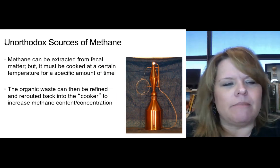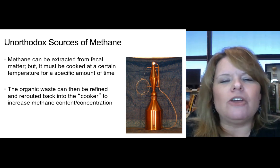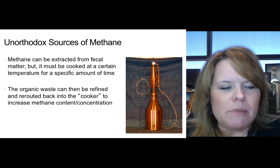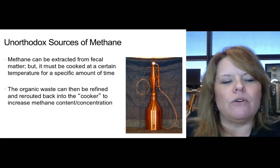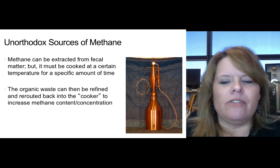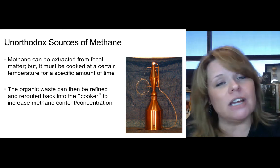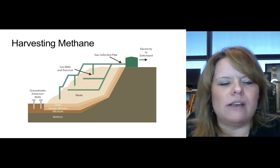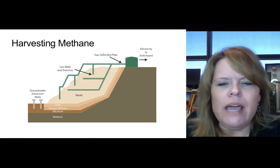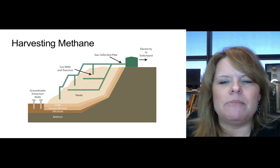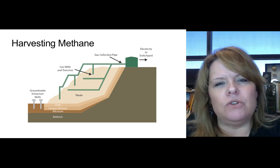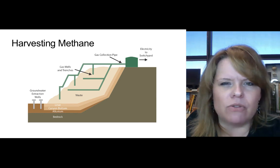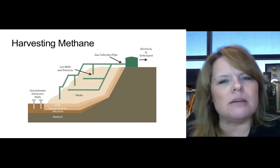Landfills and sewers release methane emissions, and some specific landfills trap methane and use it as renewable energy, selling it back to the grid. Methane can also be extracted from fecal matter — it must be cooked at a certain temperature for a specific amount of time, then the organic waste can be refined and rerouted back to the cooker to increase methane content. This is actually done at some wastewater treatment plants. When harvesting methane you pull it out of the ground, bring it up to a collection station through collection pipes, then clean it through a scrubber-type system to remove impurities before converting it into electricity.